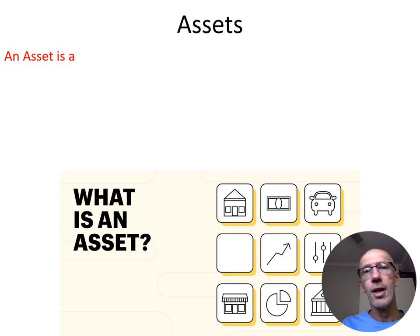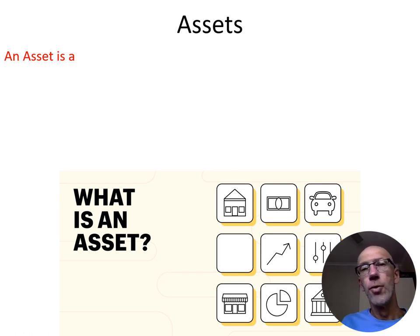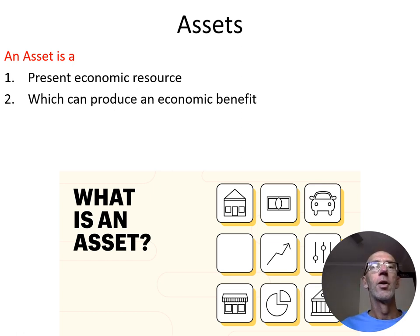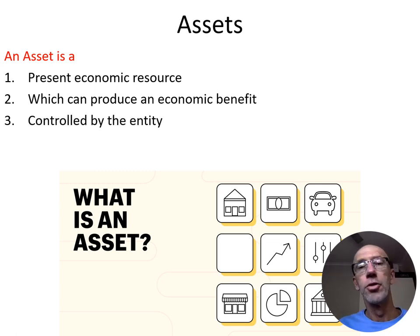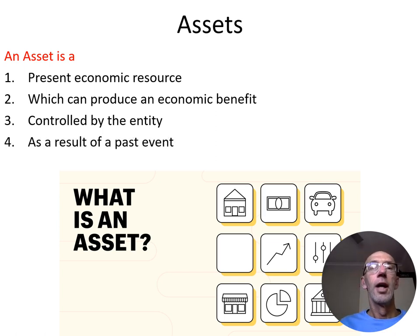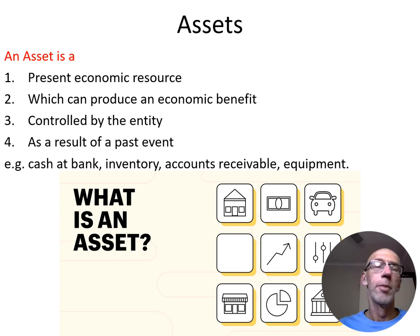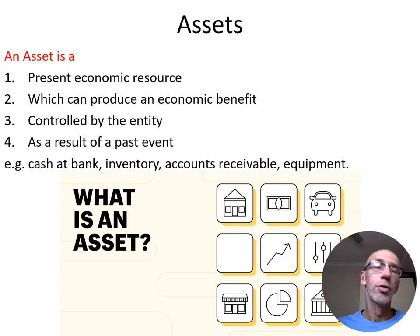Working with the VCE definitions of the three elements in this video, there are four components to assets. They are a present economic resource; they have value; they can produce an economic benefit in the future; and they are controlled by the entity as a result of a past event, a past transaction. For instance, inventory is an economic resource — it has value, it's going to produce an economic benefit when we sell it to customers and get cash for it, and the inventory is controlled by the entity as a result of a past event when we bought it from the suppliers.